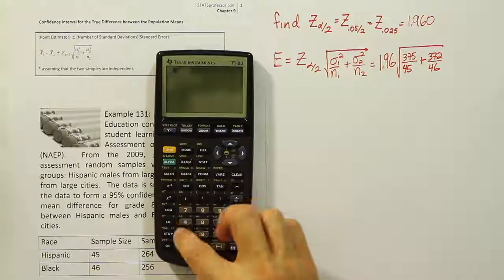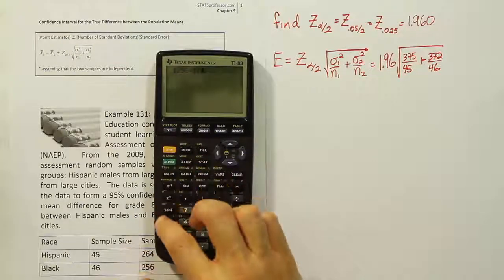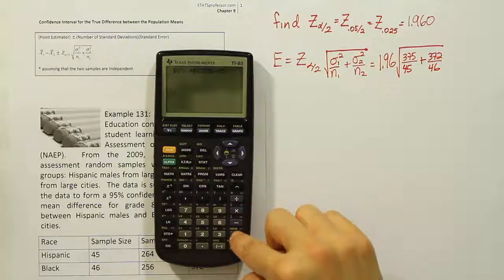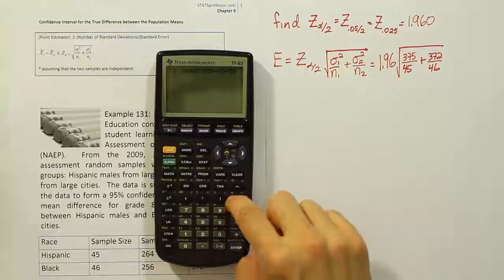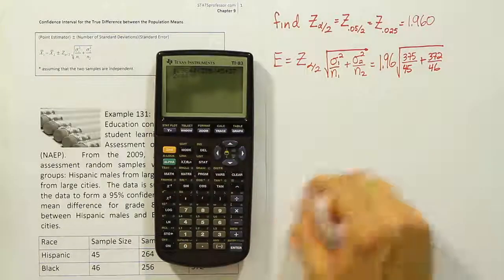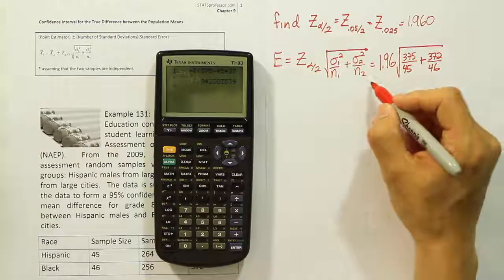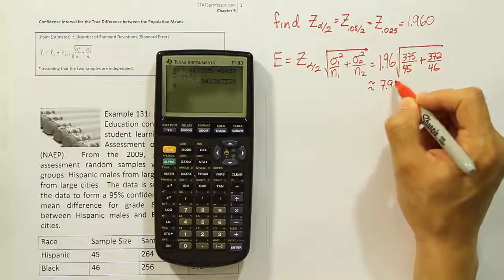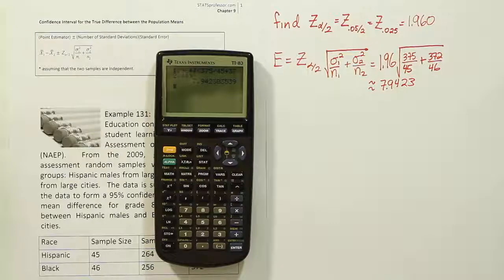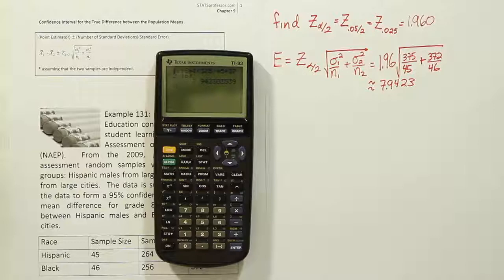Now that we have those numbers, let's enter them into our calculator and see what we get. We'll have 1.96 times the square root of 375 divided by 45, plus 372 divided by 46. Notice I didn't add any extra parentheses, just typed this part out as I saw it. And I hit enter and I get approximately 7.9423. I've rounded it out to four places, so that should give us enough safety that we won't have any rounding error in our final answer.